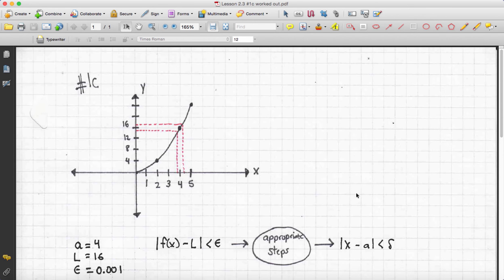Okay, now let's do problem 1c from the 2.3 homework. We're given a function, x squared. We're approaching 4 on the x axis, so that's where it's centered.